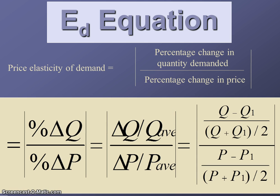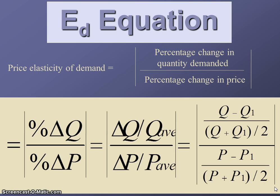Here's the more detailed form of the equation. Remember that dollars always go in the denominator and quantity is always in the numerator. In the numerator: the difference in the two quantities over the average of the two quantities. In the denominator: the difference in the two prices over the average of the two prices. You simply plug the data in and get a numerical coefficient of elasticity.